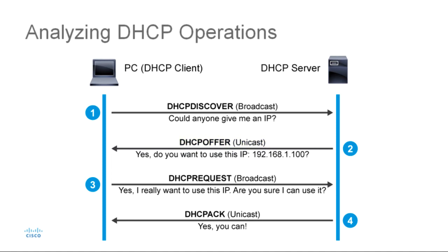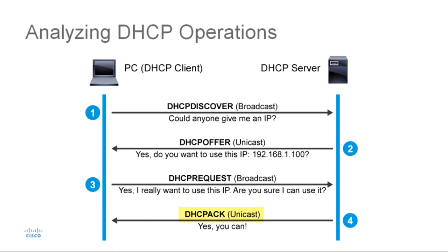When the laptop receives the DHCP offer, it responds with a DHCP request broadcast message to accept. This is a confirmation request to verify that it can really use the IP address contained in the offer. The process is not complete until the laptop receives an acknowledgement from the server. This brings us to the last step, which is the DHCP ACK. The DHCP server responds with a unicast DHCP ACK, which acknowledges the address assignment and includes any other configuration parameters to be passed along to the laptop. Once received, the DHCP acquisition process is complete.